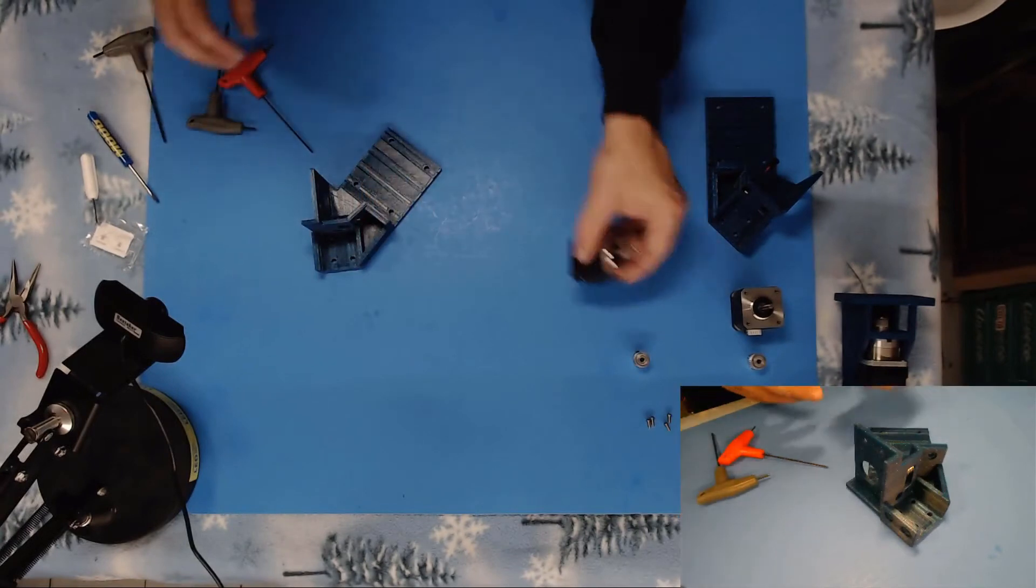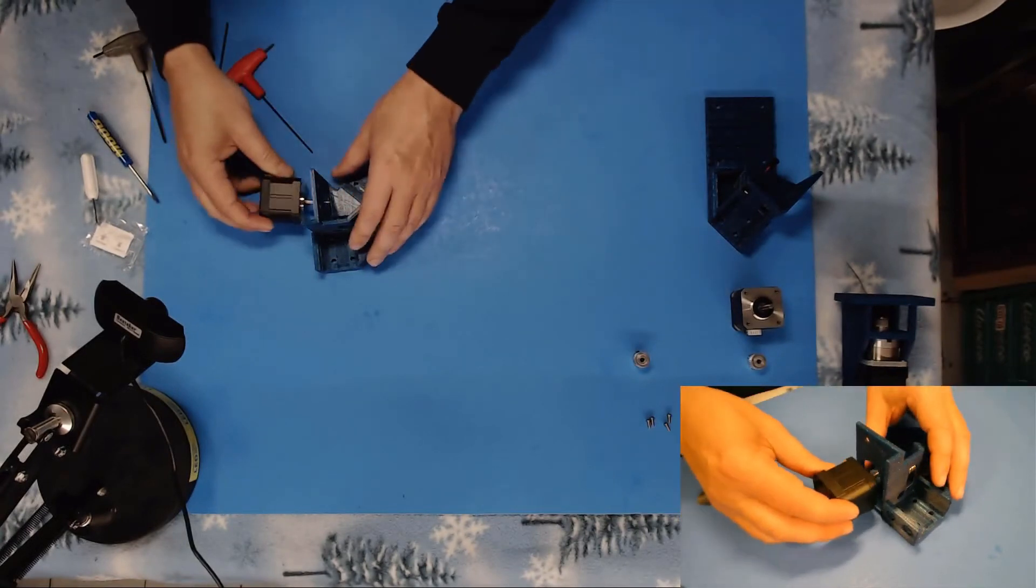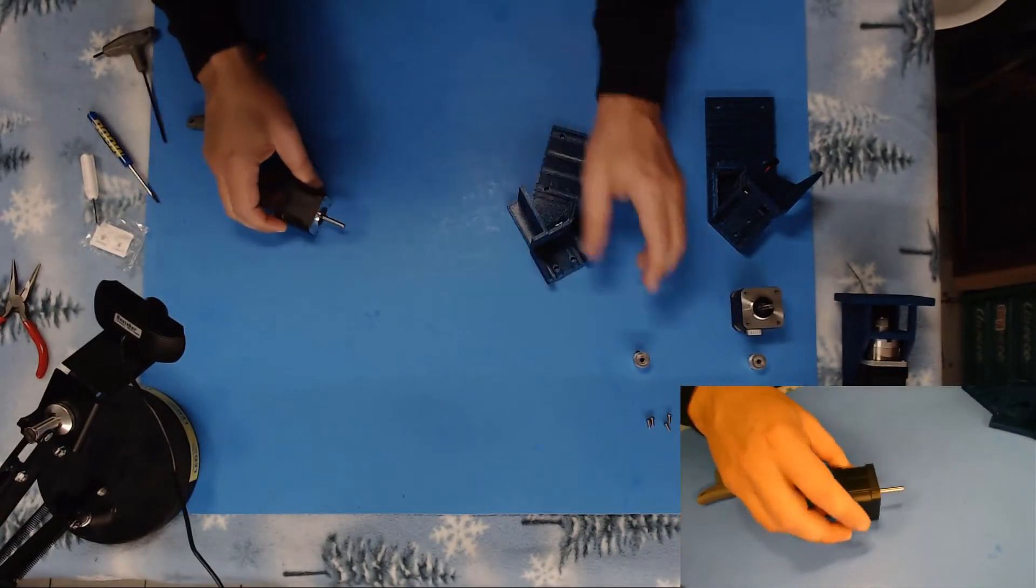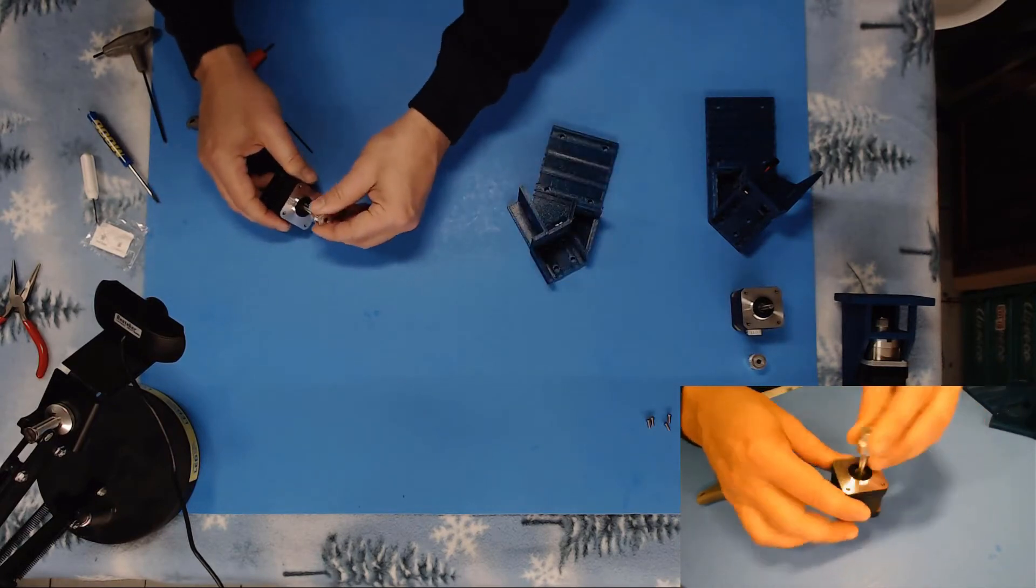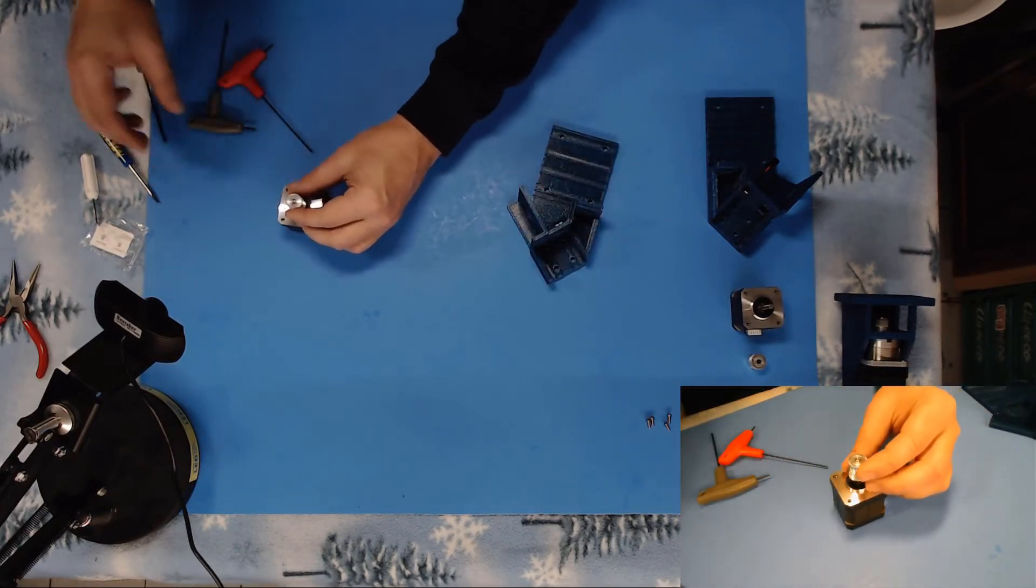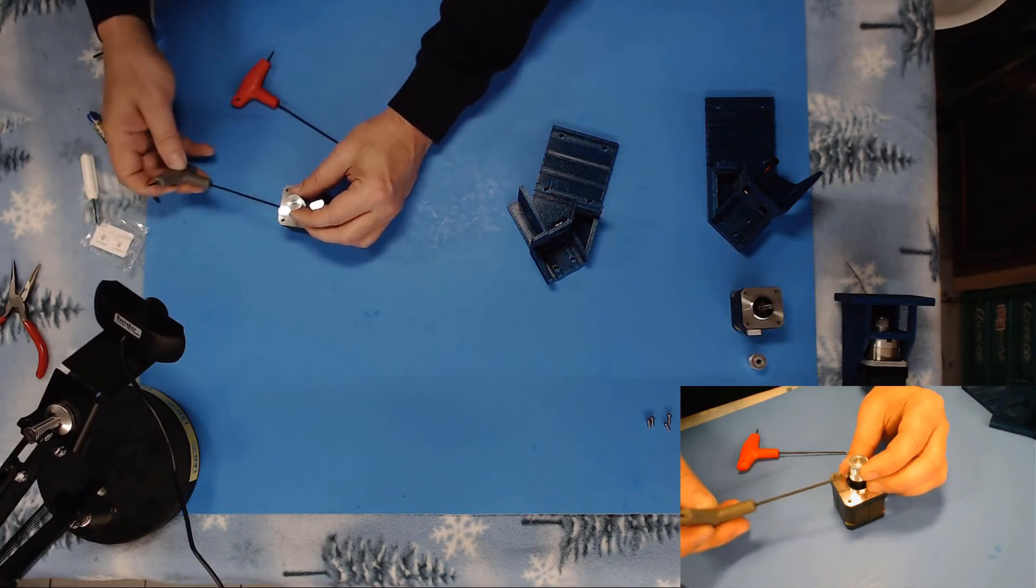Next, we're going to mount one of our axis steppers. Again, we need to put the pulley on it. So we'll set the heights on these once we have all the belts installed and everything in place.